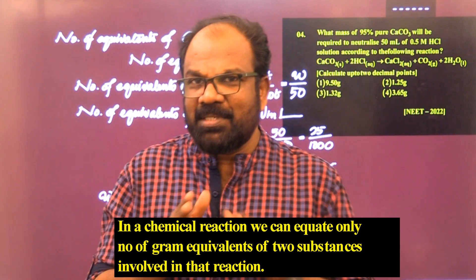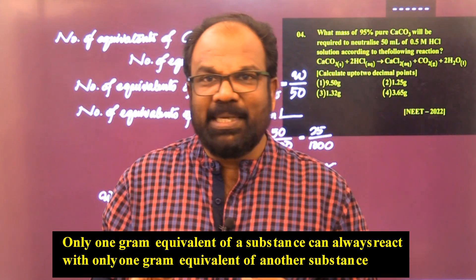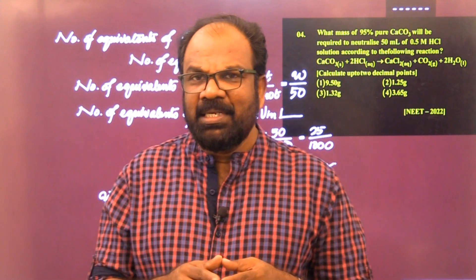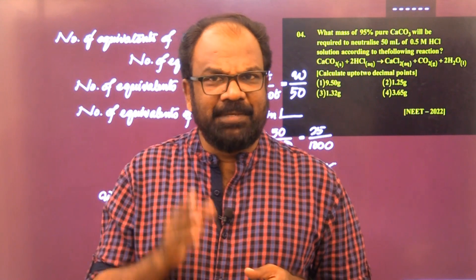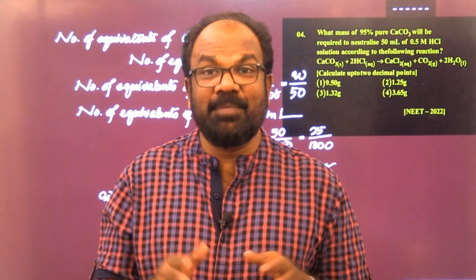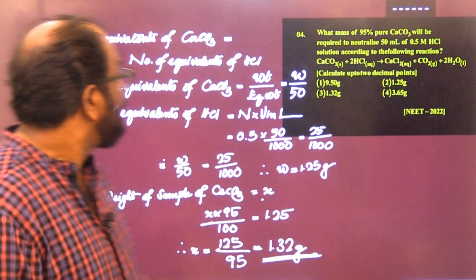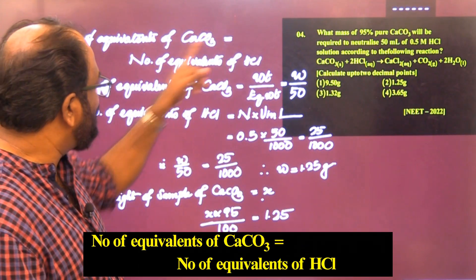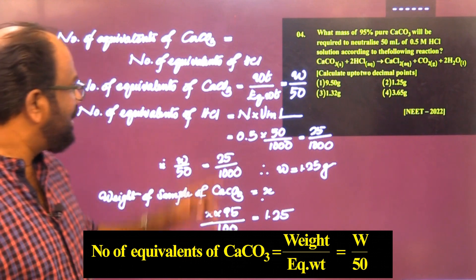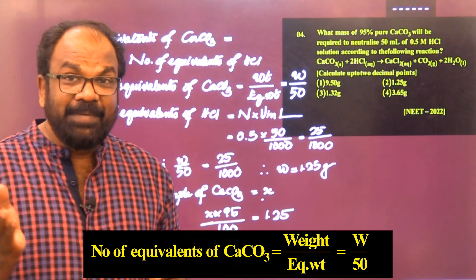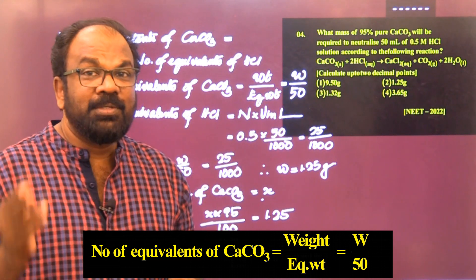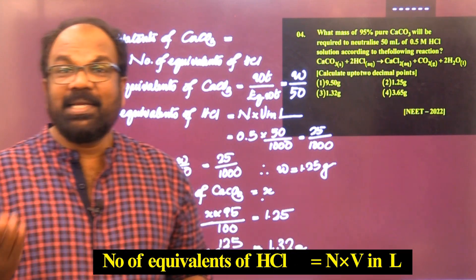In a chemical reaction, we can equate the number of gram equivalents of the two substances involved. One gram equivalent of a substance reacts with exactly one gram equivalent of another. Here, CaCO₃ reacts with 50 mL of 0.5 molar HCl. Number of equivalents of CaCO₃ = W / 50, where 50 is the equivalent mass of CaCO₃ and W is its weight.